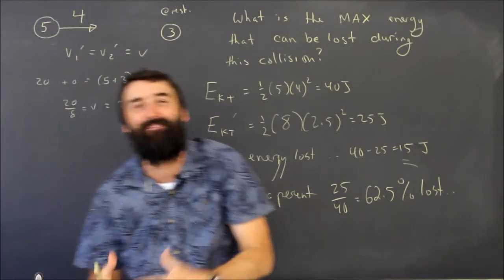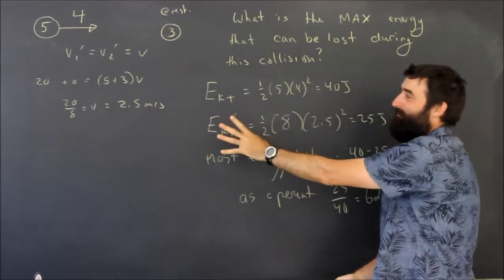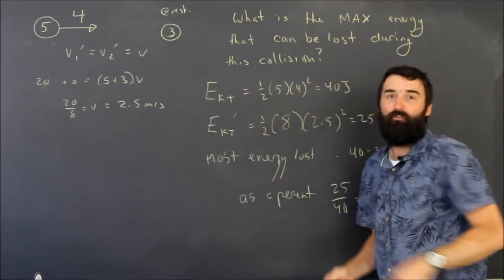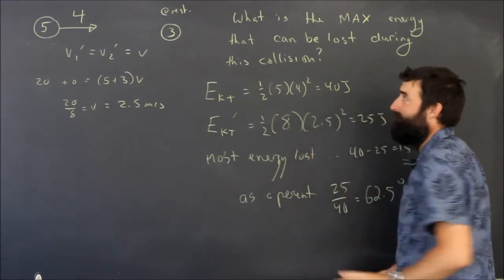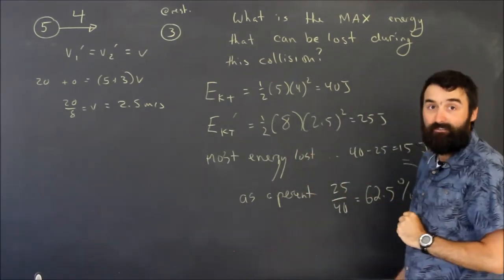The law of conservation of momentum has to be obeyed. So they can't lose any more energy because they'd go too slow for momentum. So there is a minimum there, and that happens in a perfectly inelastic collision.